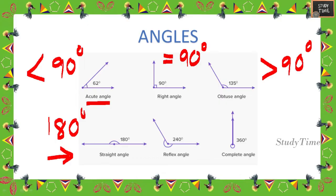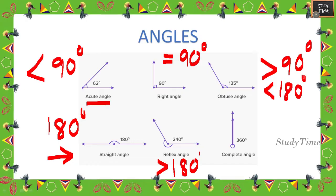If an angle is greater than 180 degrees and less than 360 degrees, we call it a reflex angle. A complete angle is 360 degrees. So to summarize: acute angle is less than 90 degrees, obtuse angle is greater than 90 degrees and less than 180 degrees. These are the different types of angles.